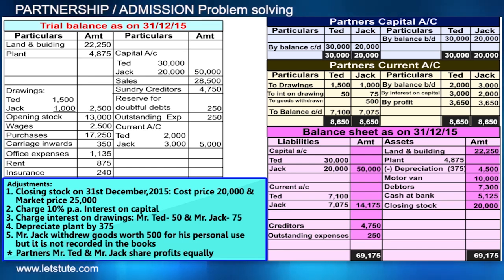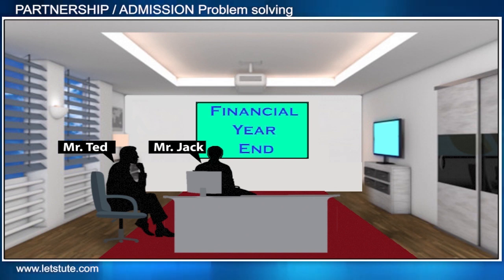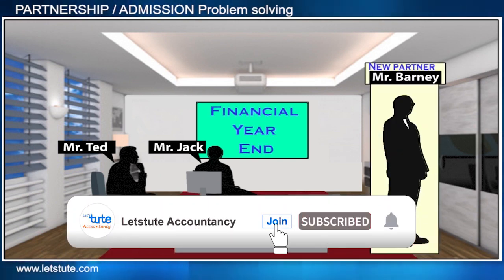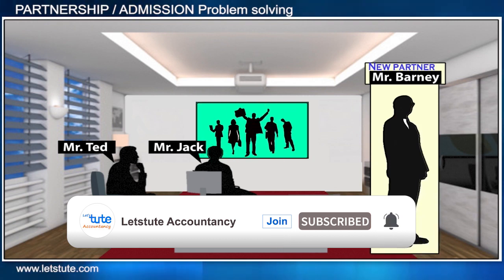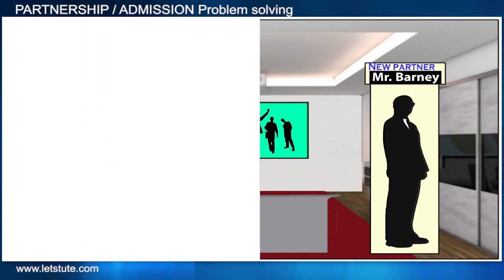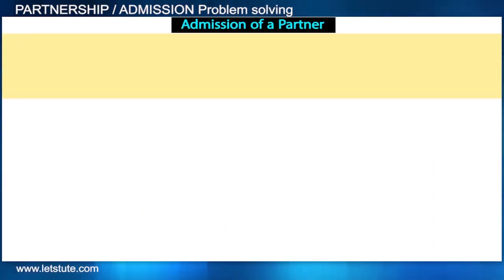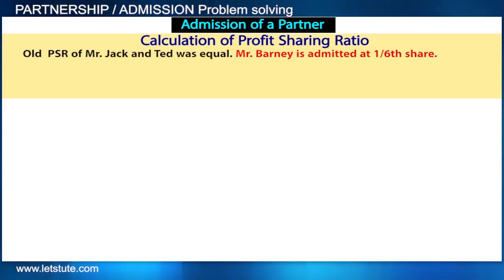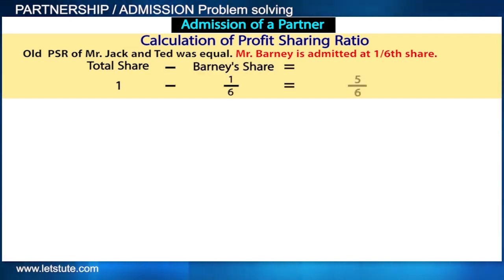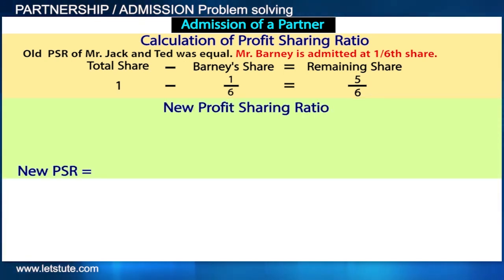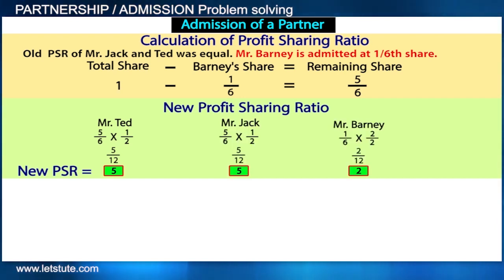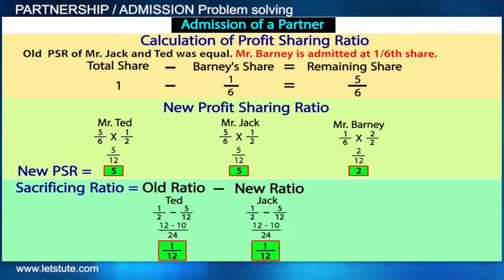We're done — wasn't that easy? There was nothing very different. But let's add a little twist: suppose on the last day of the financial year, Jack and Ted decide to admit a new partner as they require more capital and manpower. Next morning, the partners mutually agreed on certain adjustments. The first thing is to calculate their new profit sharing ratio. Barney is admitted with a one-sixth share; subtracting from the total share of one gives five-sixths remaining for the old partners. Their new profit sharing ratio is 5:5:2, and their sacrificing ratio is calculated accordingly.